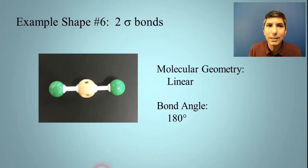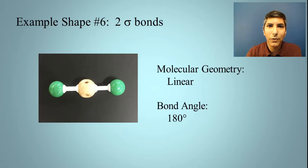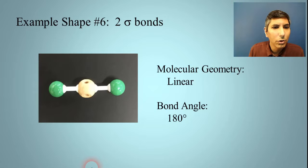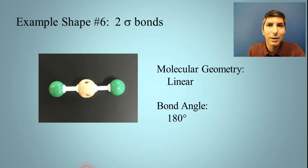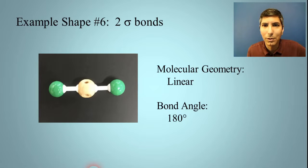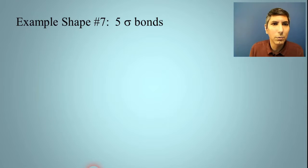These six shapes are the ones that follow the octet rule and are by far the most common you'll encounter in AP Chemistry and most of chemistry. However, you are also responsible for knowing structures that are exceptions to the octet rule — more specifically, the expanded octets. These have sometimes more complicated and unusual shapes. Let's try a couple of those.